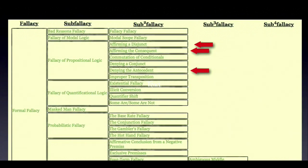In particular, we looked at affirming a disjunct, affirming the consequent, and denying the antecedent. As you can see, you could spend a lot of time just looking at formal fallacies.